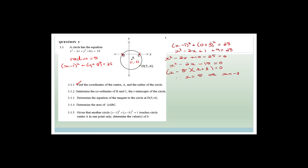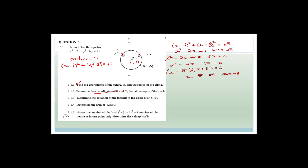Therefore the coordinates are B equals (minus 3, 0) and C equals (5, 0). Notice they asked for coordinates, so you can't just write x equals 5 or x equals minus 3 — you need to include the y-value of 0. If you just write the x-values, you haven't answered the question and you will lose marks. Please be careful of that.